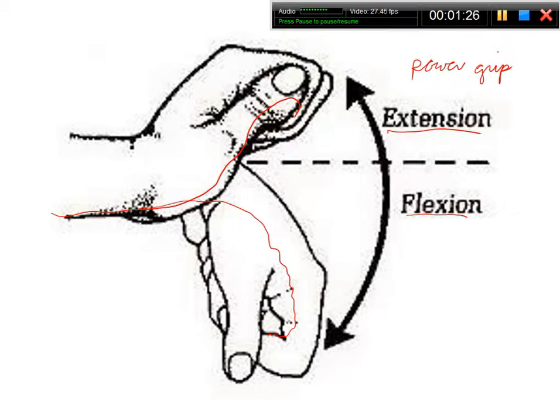So to put our wrist into an extended position, we rely on the extensor groups. So the extensor digitorums, the extensor carpi radialis longus, extensor carpi radialis brevis, extensor carpi ulnaris.